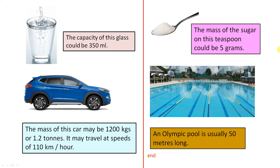The capacity of this glass could be 350 milliliters. Now ML is short for milliliters. You can have smaller glasses with a capacity of 200 milliliters or 250, and I'm sure you can have larger glasses which might have a capacity of 400 or 500 milliliters.